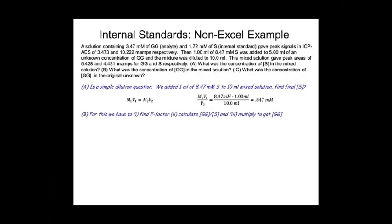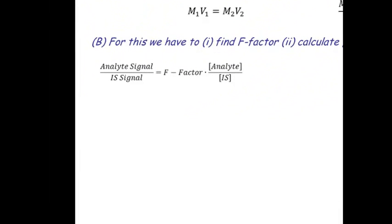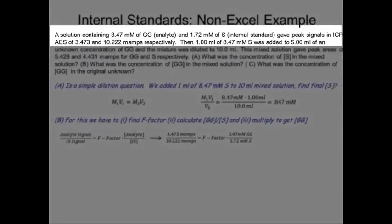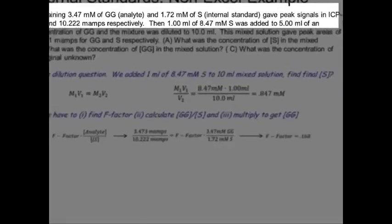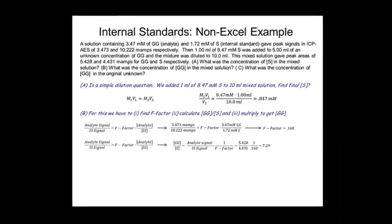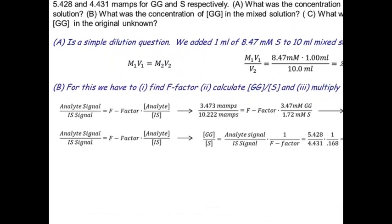The second part of this question is what's the concentration of the analyte in that second mixture? So let's find the F factor. There's the equation that we started with on the last page. Now, put in the data from this experiment. All of this data came from the first sentence. You can see 3.47. We just plugged in all the data given to us in that first sentence. And we calculated an F factor of 0.168.